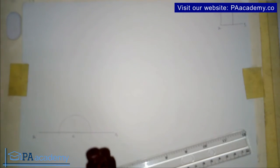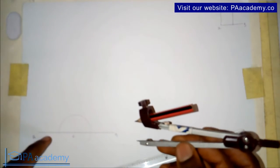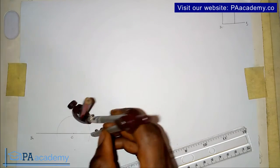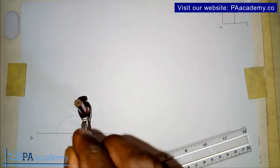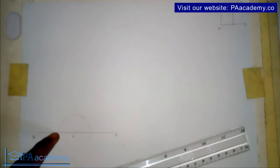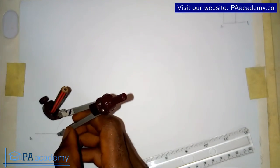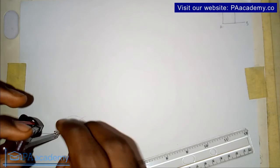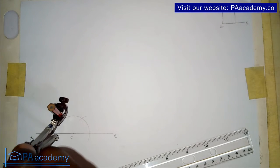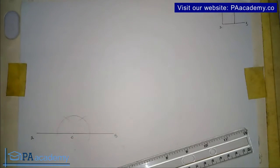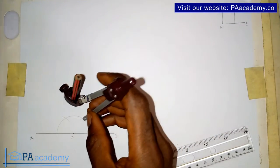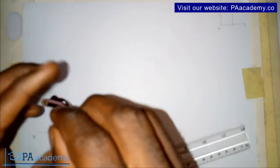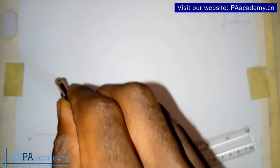With the same compass length, where this semicircle is touching line AB it's touching it on two points. You place your compass on one of those points and draw an arc, then on the other point you also draw an arc with the same compass length. So where these two arcs are touching the semicircle, with the same compass length you place it there and draw another arc.